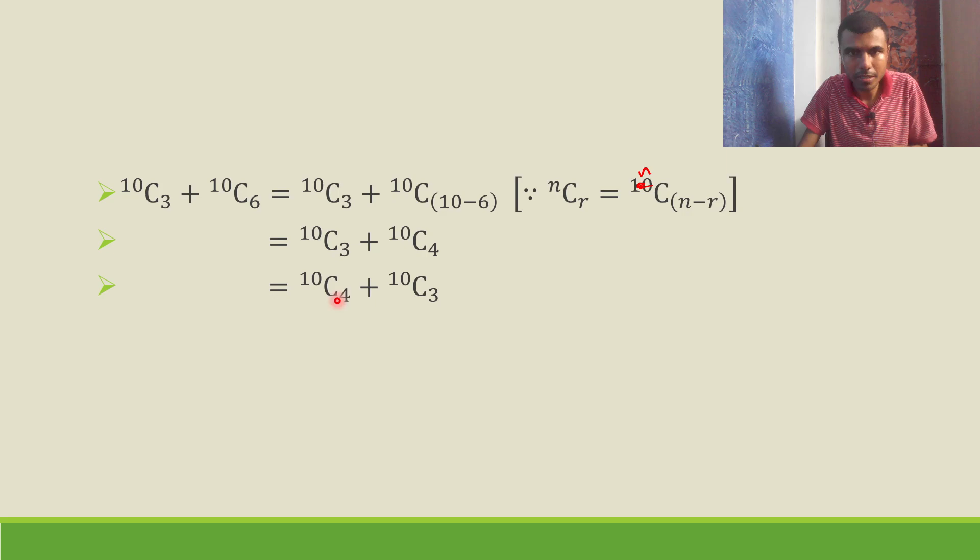Reverse it, 10C4 plus 10C3. Now this is of the form 10C4 plus 10C3. You see nCr plus nC(r-1), 10C4 and 10C(4-1). So whenever it is like this, the formula is (n+1)Cr. So I will get 11C4.